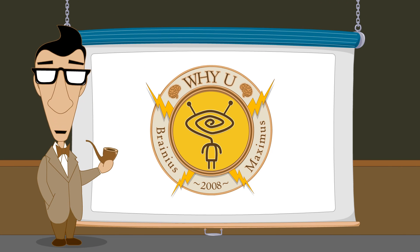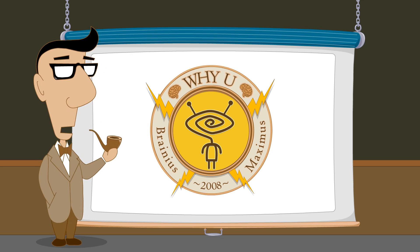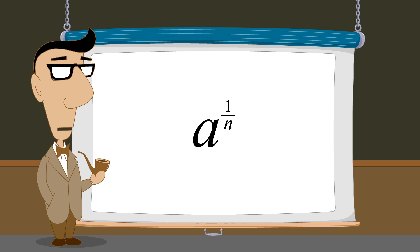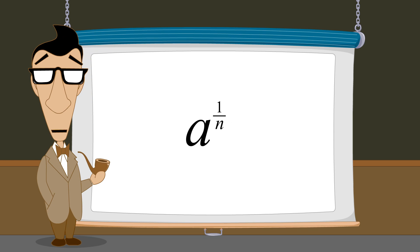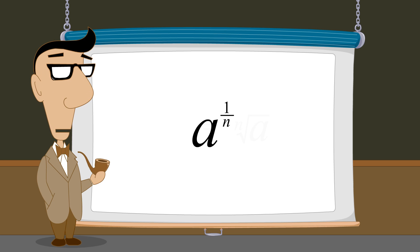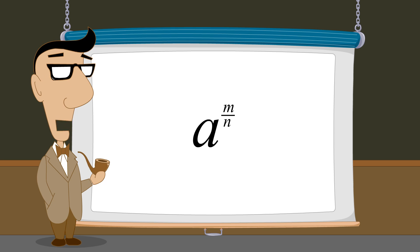Hello, I'm Professor Von Schmohawk, and welcome to Why U. In the previous lecture, we saw that any number with an exponent 1 over n represents the nth root of that number. In this lecture, we will show that exponents can also be fractions with numerators other than one. In fact, an exponent can be any positive or negative rational number.